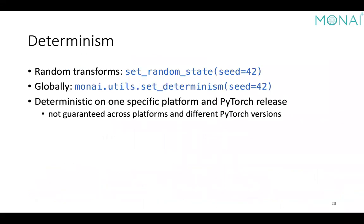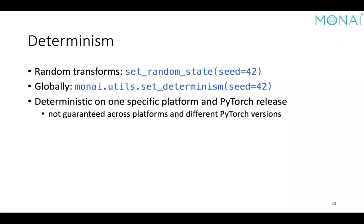For reproducible pre-processing, we can set the transform random states. For global determinism, use the MONAI utility function to set random states for everything — mainly NumPy and PyTorch. Note that given a specific platform and PyTorch release, repeating your training experiment will likely be deterministic, but there's no guarantee across different platforms.